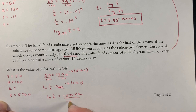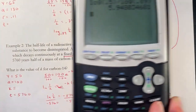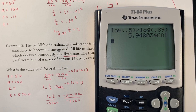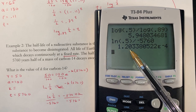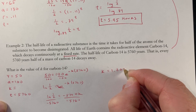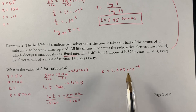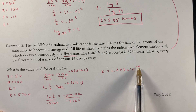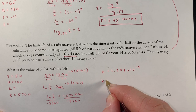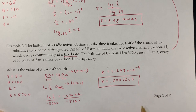Now we divide by -5,760. Entering ln(0.5) ÷ (-5760) into the calculator gives 1.203 × 10^(-4). So k = 1.203 × 10^(-4), which in decimal form is 0.0001203. That is our decay constant for carbon-14.